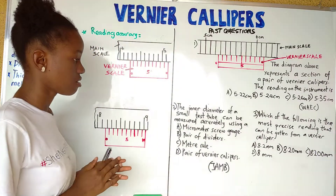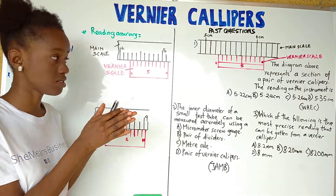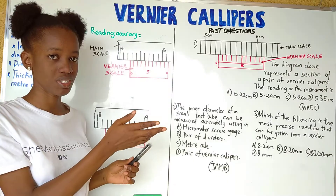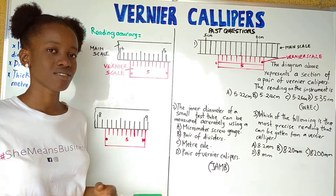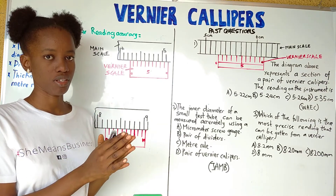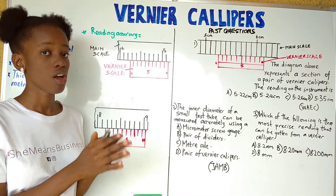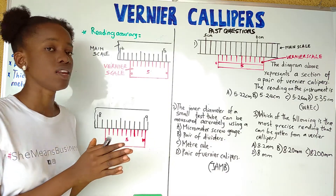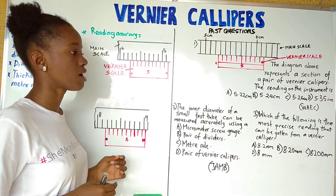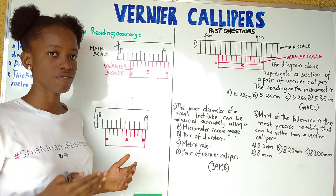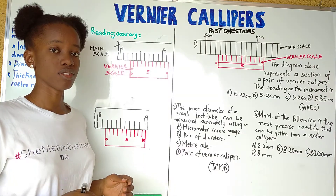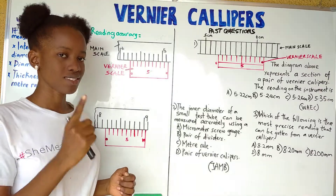Vernier calipers. We want to see how to solve vernier caliper questions. But before we do this, we have to look at the term called reading accuracy. Reading accuracy is the smallest graduation of a measuring instrument. Let's take for instance the measuring instrument for time, which is the clock. It can have hours, minutes, and seconds. The smallest graduation is seconds, so the reading accuracy is going to be one second.